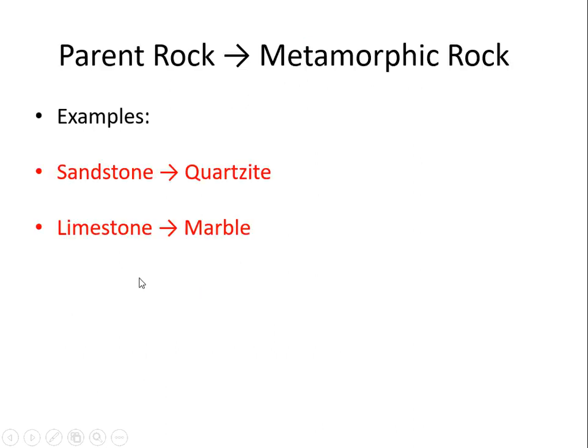Every metamorphic rock has a parent rock, just like we have parents. A rock is born from another rock. We could have a sandstone, which is sedimentary, and if heat and pressure is applied to sandstone, you would get quartzite. When heat is applied to limestone, a sedimentary rock, it becomes metamorphic marble. When shale, a sedimentary rock, is squeezed with heat and pressure, it becomes slate.